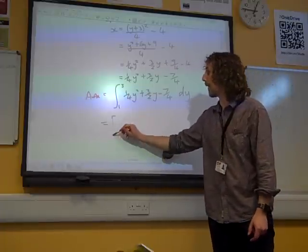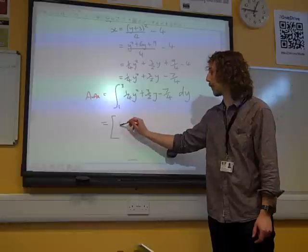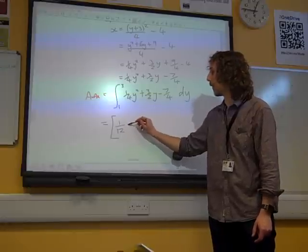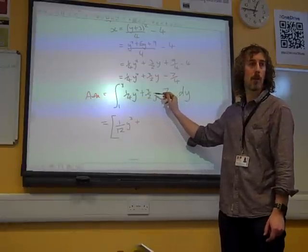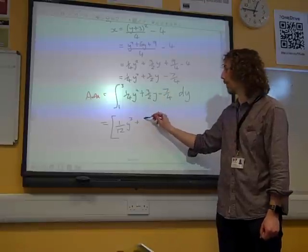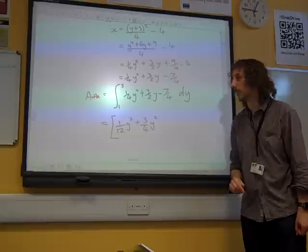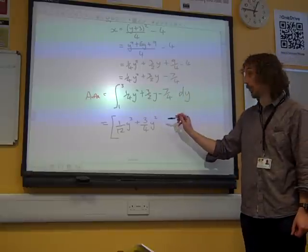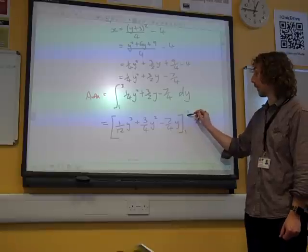We're going to add 1 to the power and divide by the new power y cubed over 3. So that's 1 over 12y cubed. 3 over 2y, so that will become 3 over 4y squared. And minus 7 over 4 becomes minus 7 over 4y between 1 and 3.